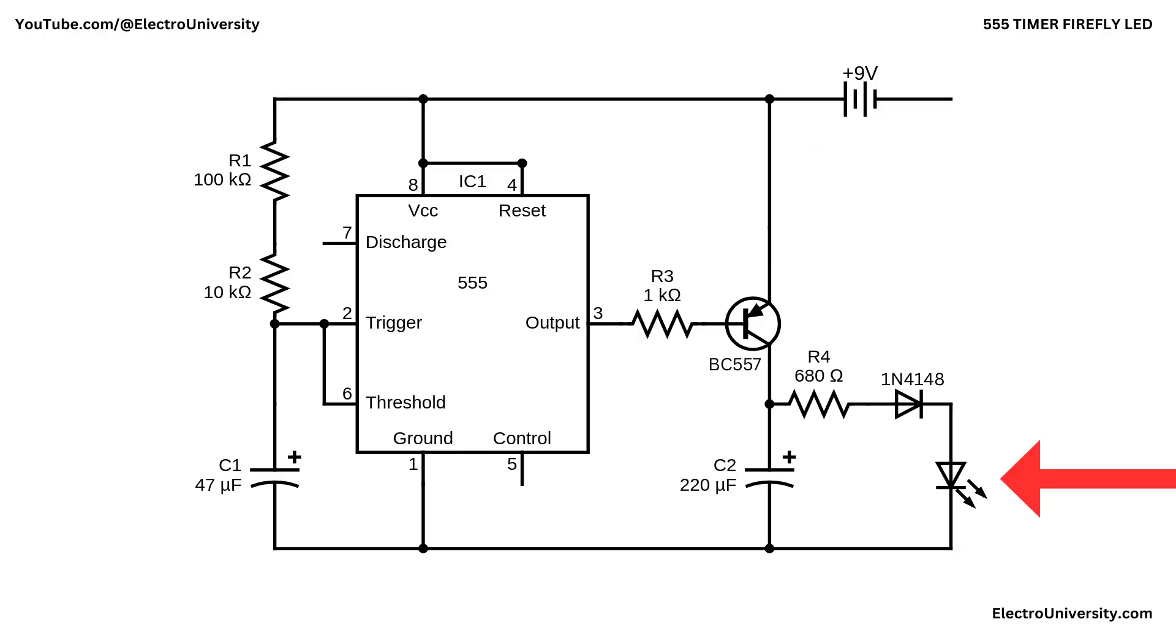R4 acts as the LED's current-limiting resistor, both when the transistor is on and while C2 is discharging. Without it, the LED could draw excessive current during the initial charge pulse. Putting it all together, the 555 repeatedly generates a short on-command for the BC557 followed by a longer off period. Each time the BC557 turns on, C2 charges quickly and the LED flashes brightly. When the transistor turns off, C2 discharges through the LED, causing the brightness to decay smoothly back to darkness. This repeating sequence of quick bright flashes with a soft fade creates the characteristic Firefly effect that gives the circuit its name.